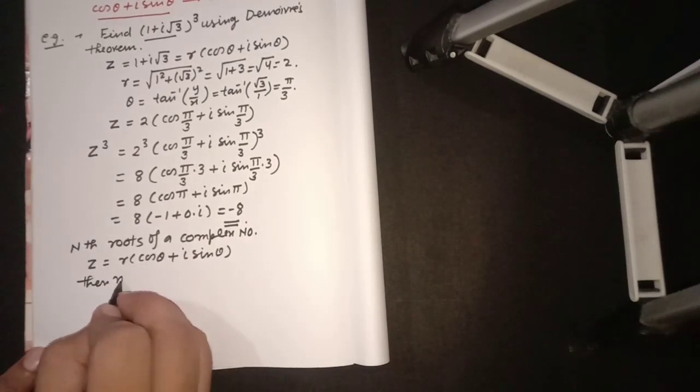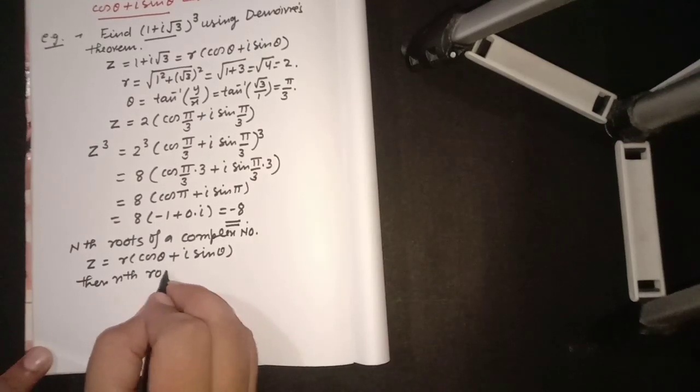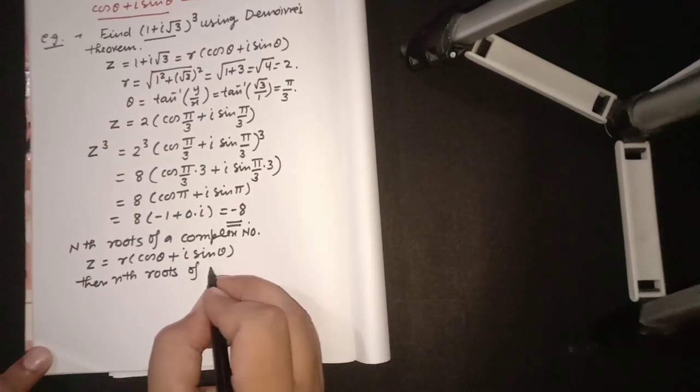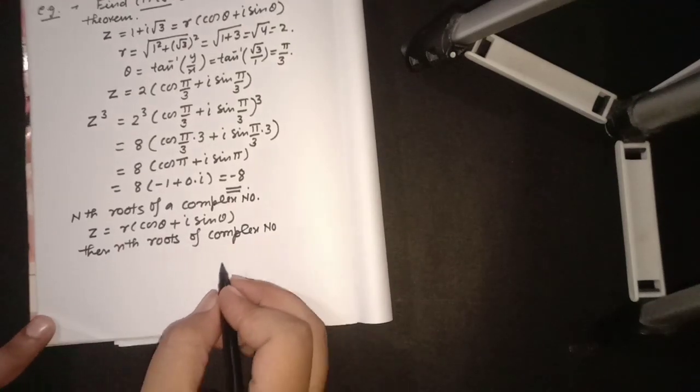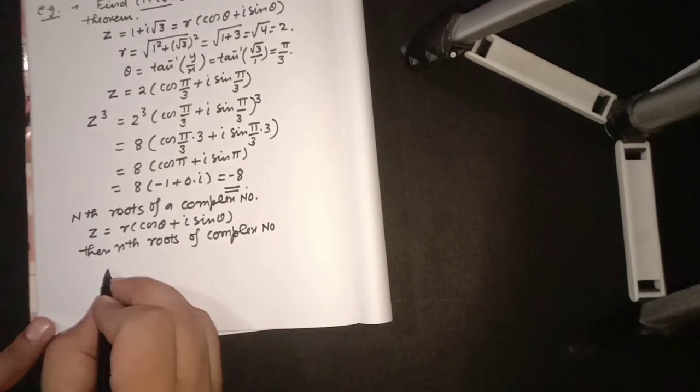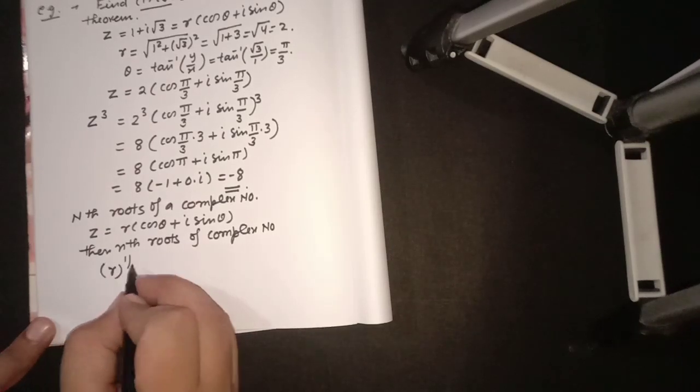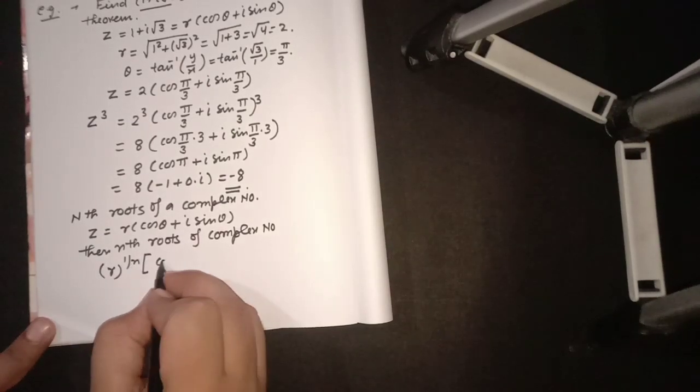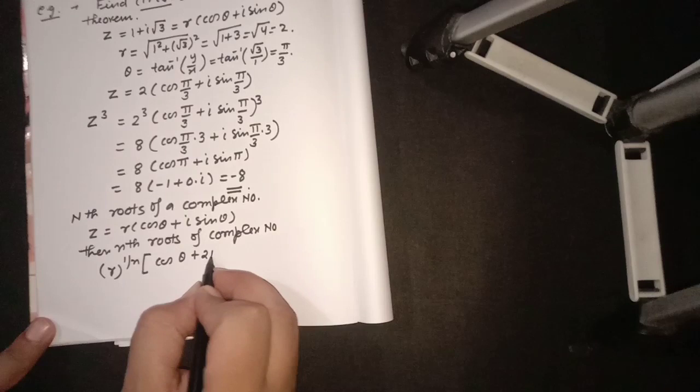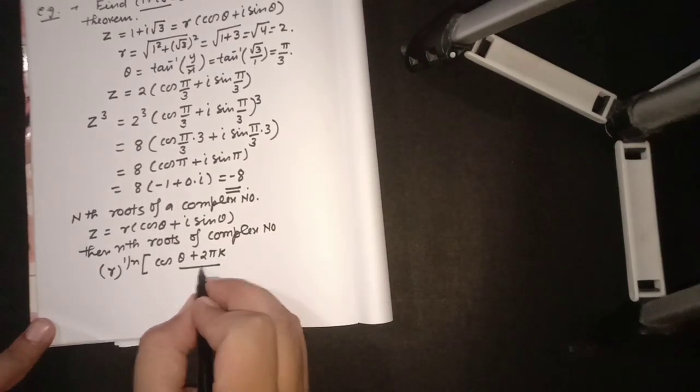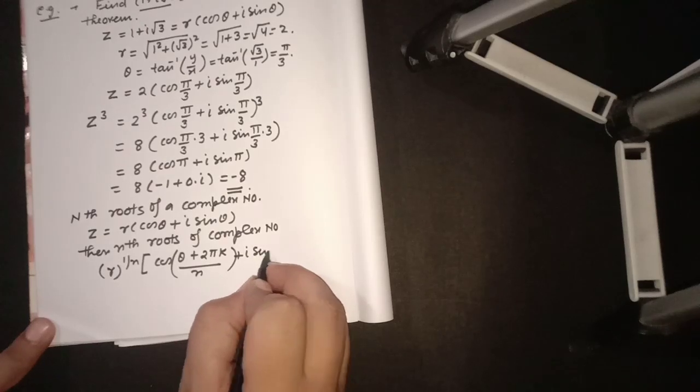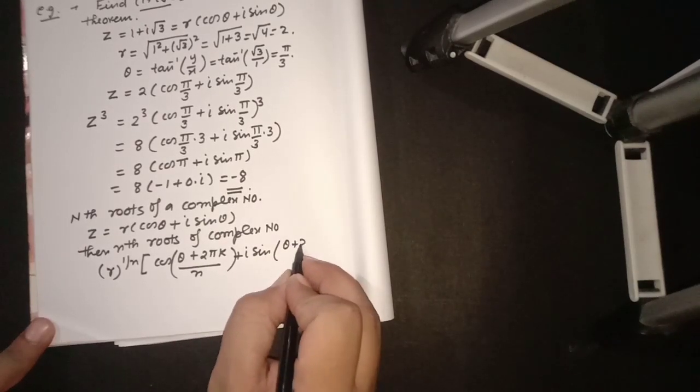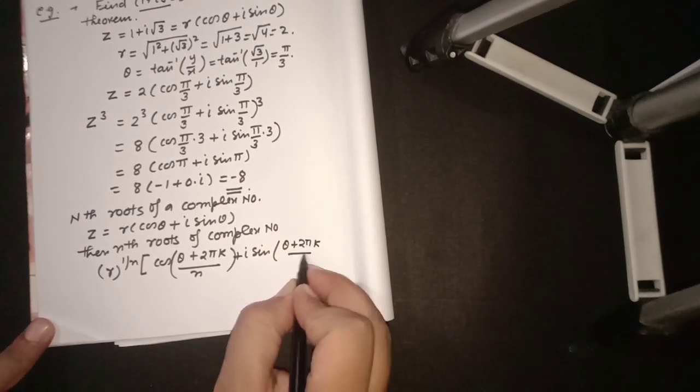Then nth roots of complex number are given by that will be equal to r^(1/n) [cos((θ + 2πk)/n) + i sin((θ + 2πk)/n)], where k = 0, 1, 2, ..., n-1.